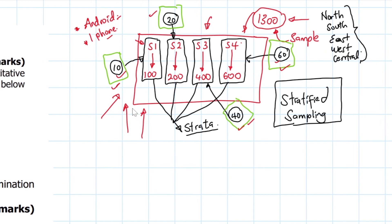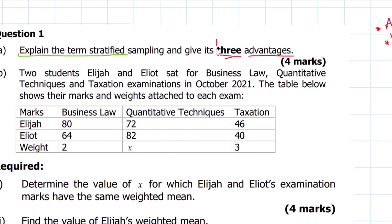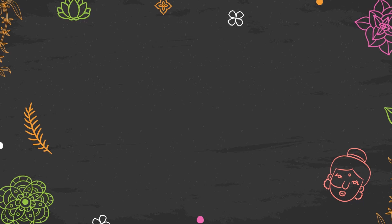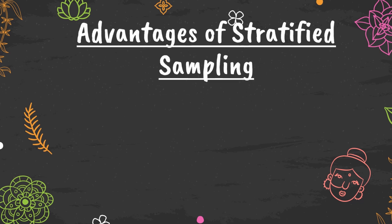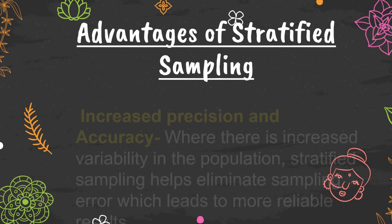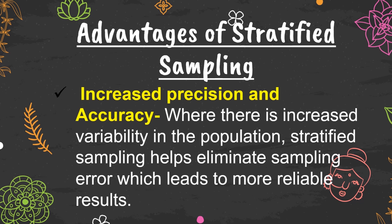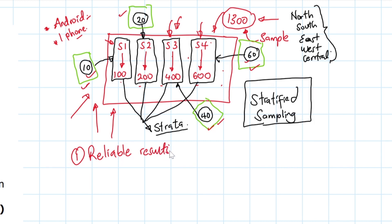Now for the three advantages. The first advantage is increased precision and accuracy of statistical estimates. When there is considerable variability in the population, representation from each stratum helps eliminate sampling error, which leads to reliable results. Rather than picking at random from the whole population, dividing into groups of similar characteristics and picking from each group increases the precision and accuracy of our results.